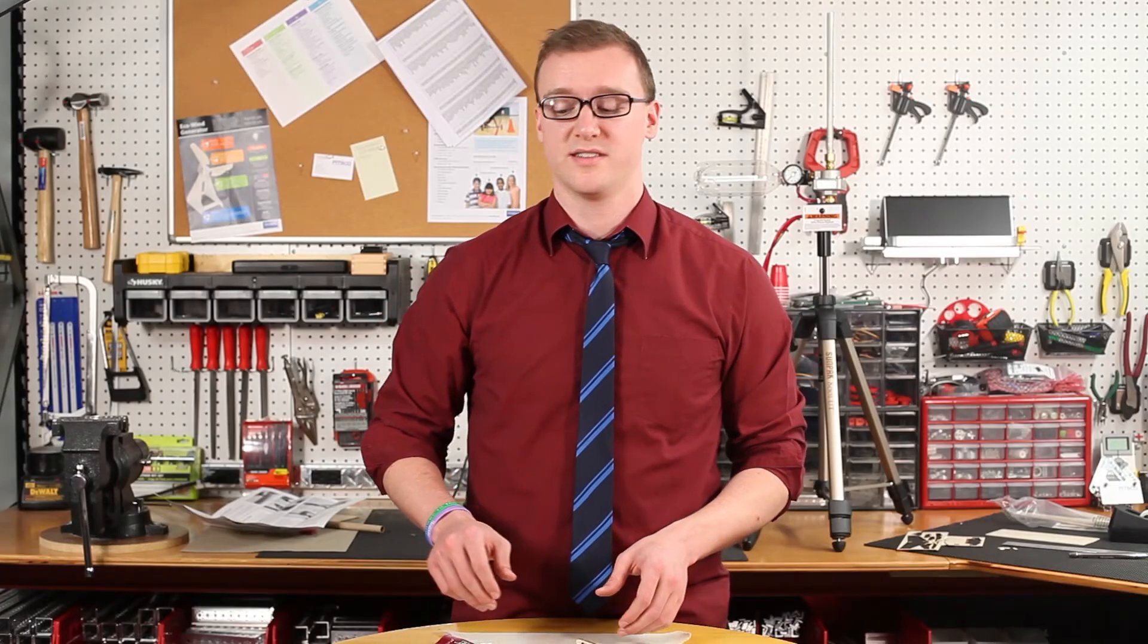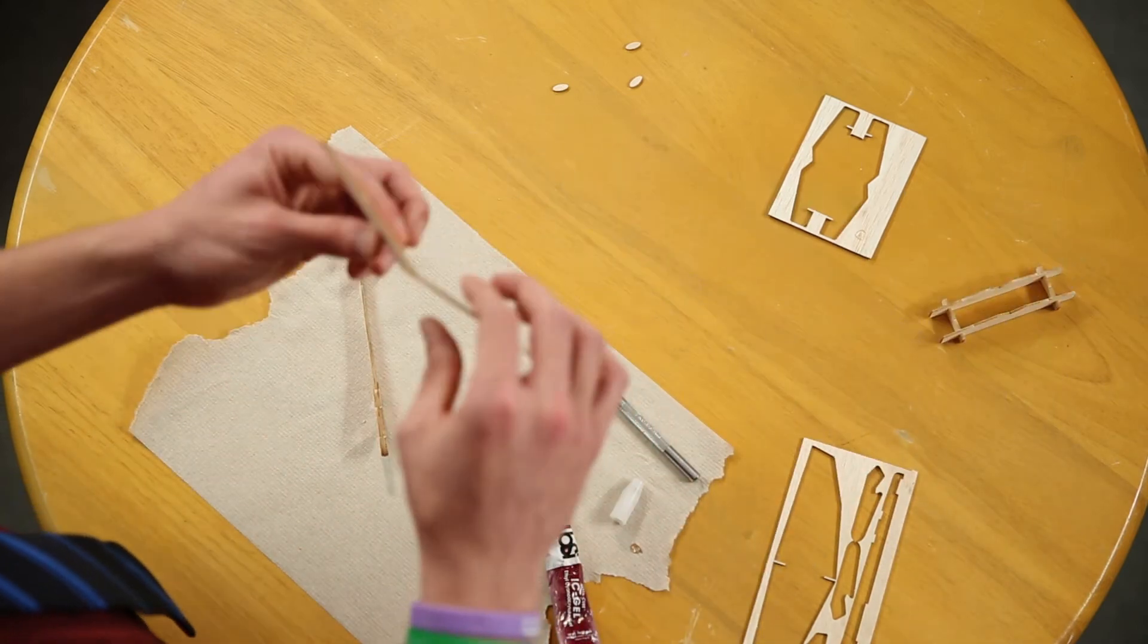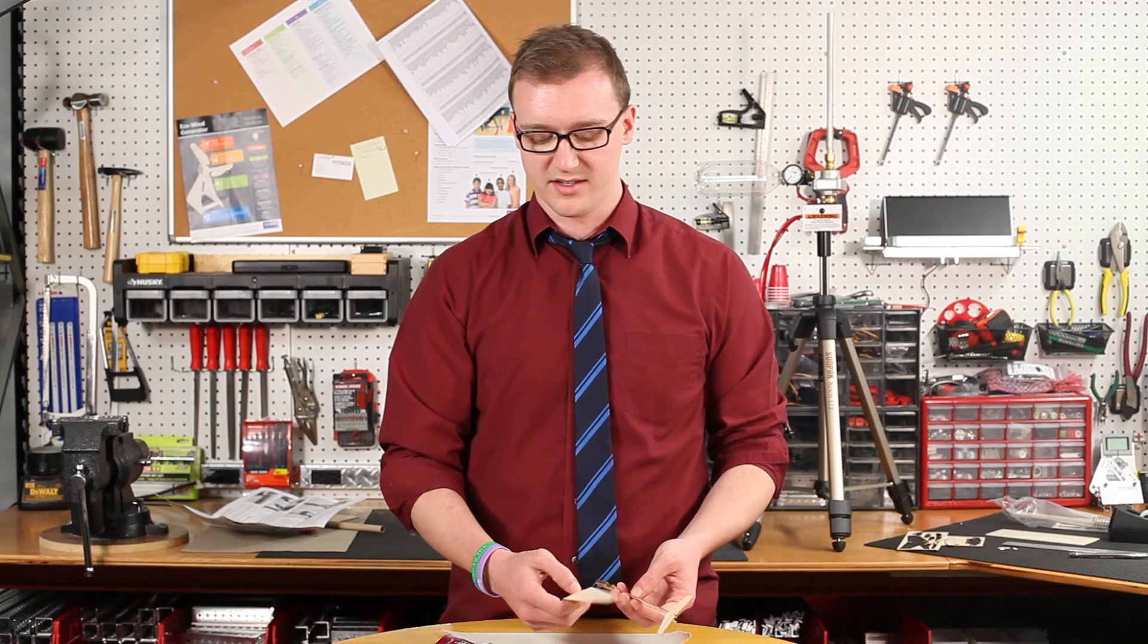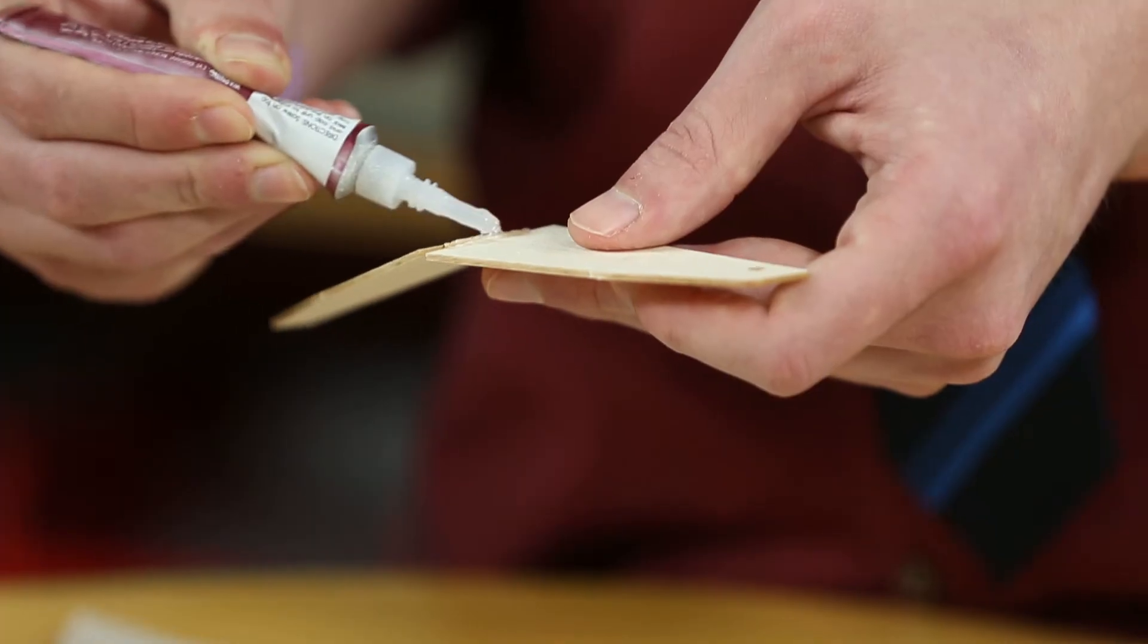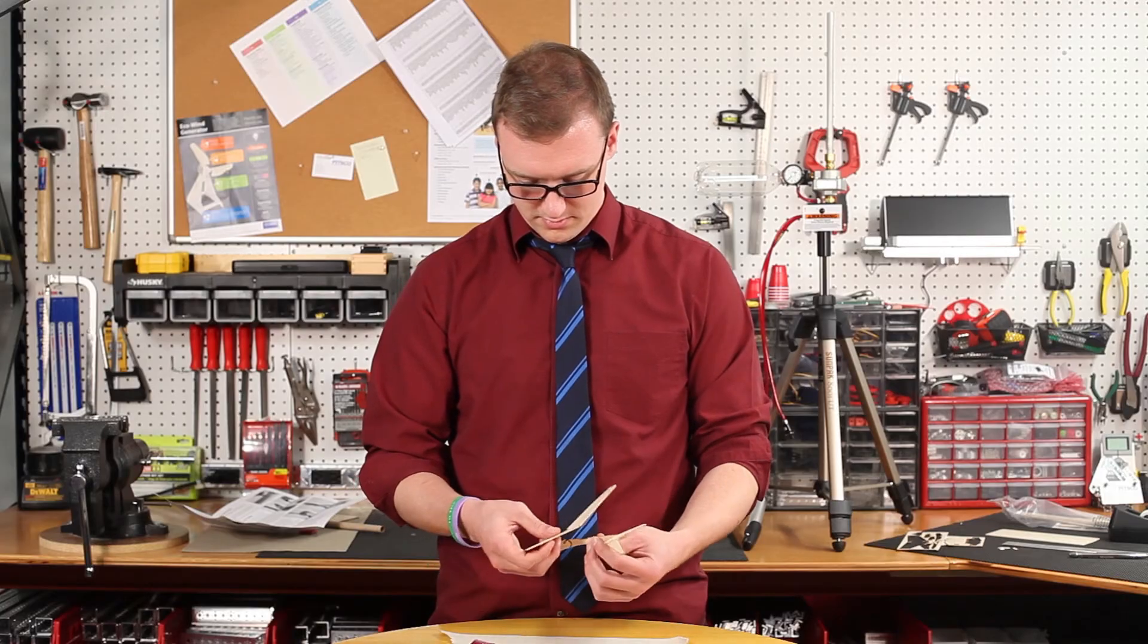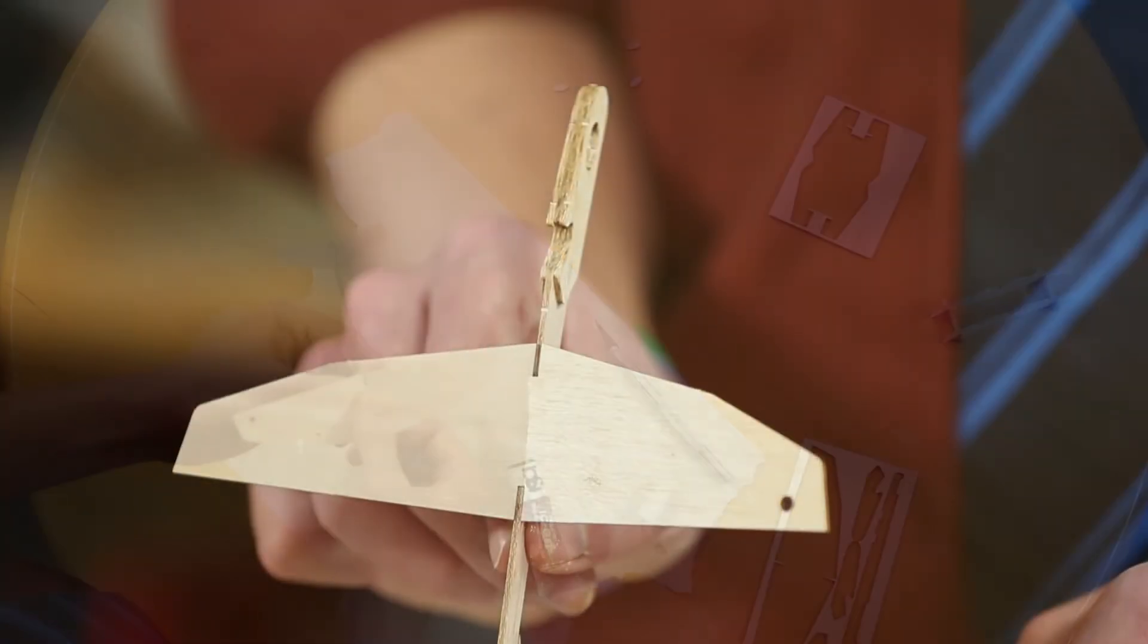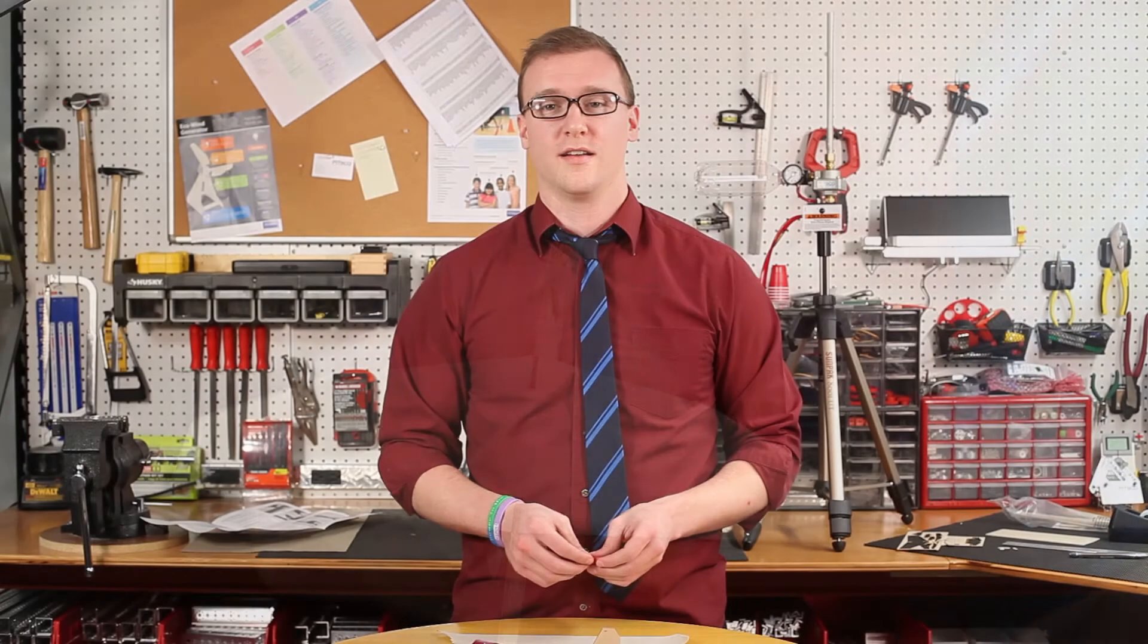Next, you want to take the wing that you've had sitting on the wing dihedral gauge, and you're going to glue it to the top of the fuselage where that notch is. You're going to want to place glue along the same line that you glued the crack earlier.